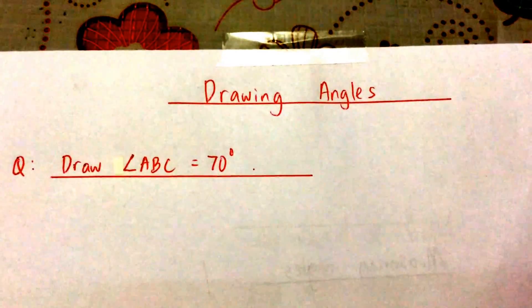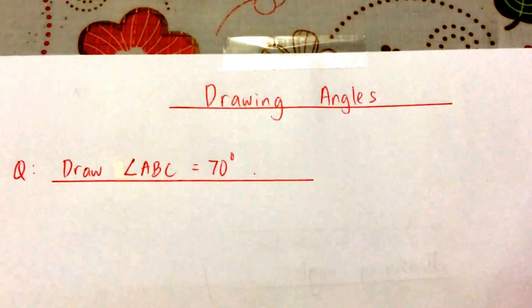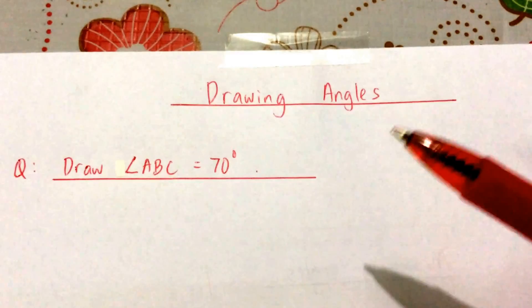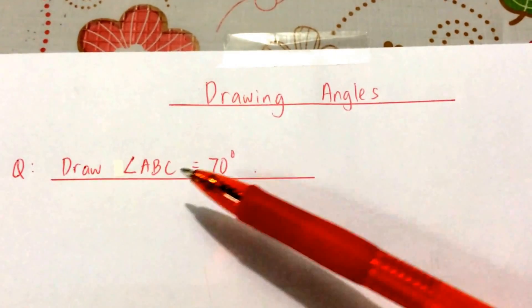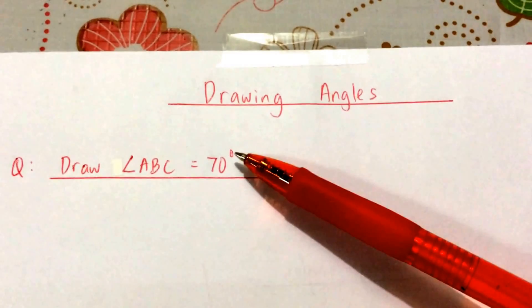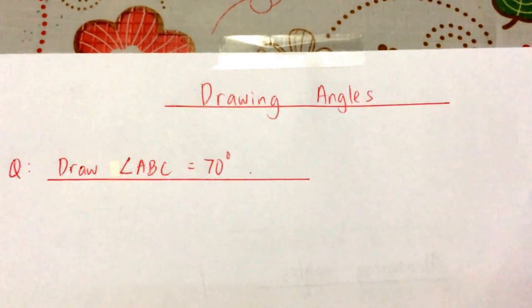Okay, in this video you're going to learn how to draw angles. For example, if the question says draw angle ABC that is 70 degrees, how are you going to do this?